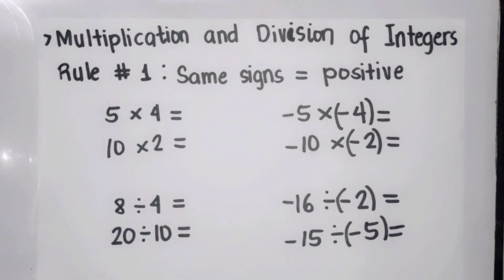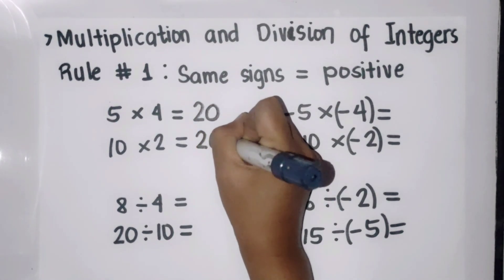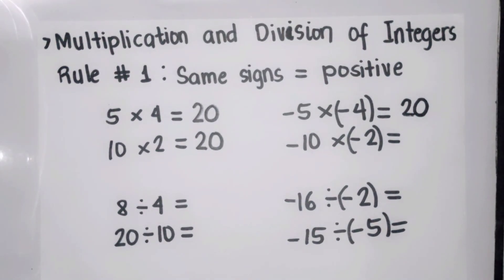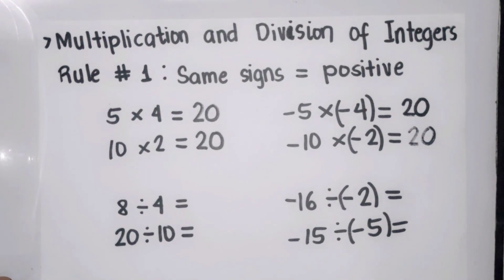Let's proceed to multiplication and division of integers. Multiplication and division have the same rules. Rule number one: when multiplying or dividing integers with the same signs, the answer will always be positive. Examples: five times four is positive twenty; ten times two is also positive twenty. Negative five times negative four is also twenty — since both are negative, the answer is positive. Negative ten times negative two: ten times two is twenty, and since both are negative, the answer is positive.